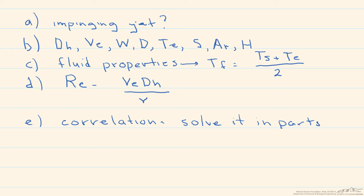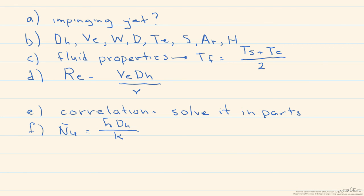After you have the Nusselt number — remembering that Nusselt number equals H times the hydraulic diameter divided by the thermal conductivity of the fluid — solve for H, being careful to use the hydraulic diameter. Then finally, solve for the heat transfer: Q equals H times the cross-sectional area of the cell times delta T, which in this case is the temperature of the surface minus the exit temperature at the nozzle.